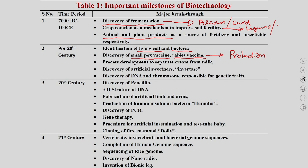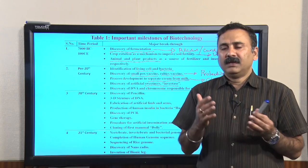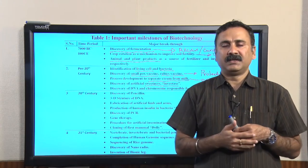They developed a process to separate cream from milk, starting to develop cream, ghee, and other vegetable oils as biotechnology products. They also discovered the artificial sweetener invertase. By the end of the pre-20th century, they understood that DNA is the genetic material and started studying mutual interaction between two different species — how that helps develop offspring and how genetic information passes from one generation to another.